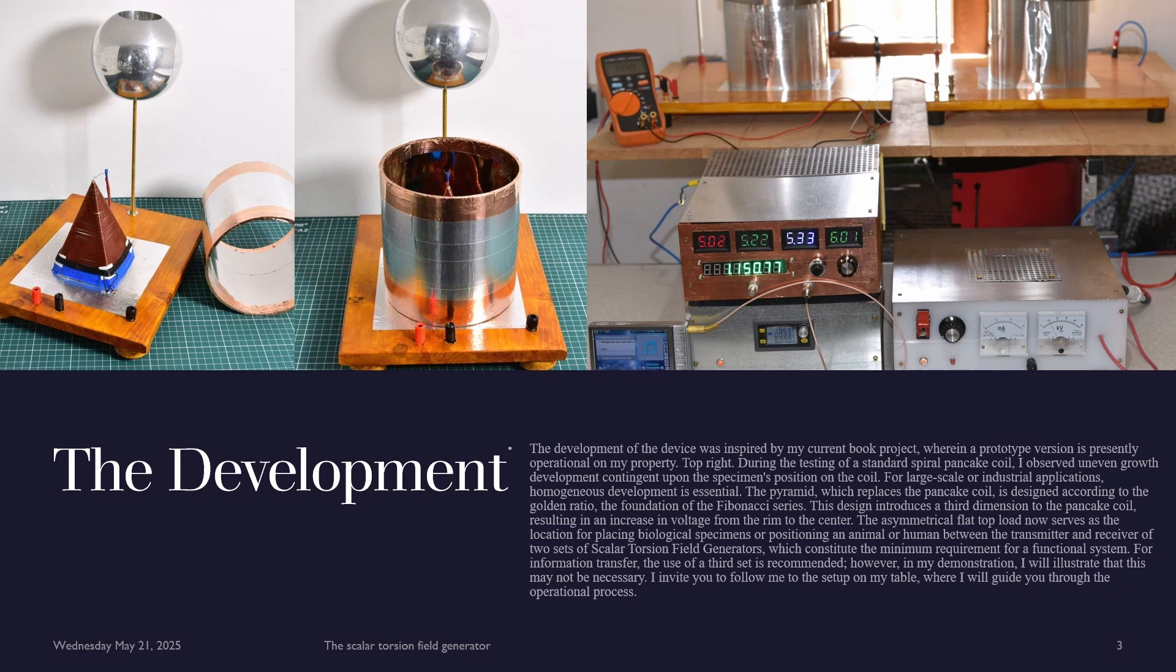The asymmetrical flat top load now serves as the location for placing biological specimens or positioning an animal or human between the transmitter and receiver of two sets of Scalar Torsion Field Generators, which constitute the minimum requirement for a functional system. For information transfer, the use of a third set is recommended.